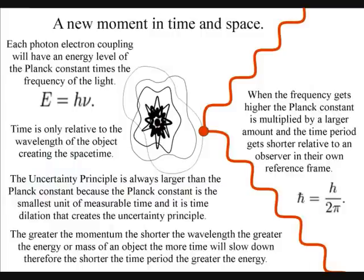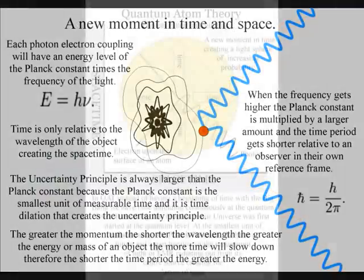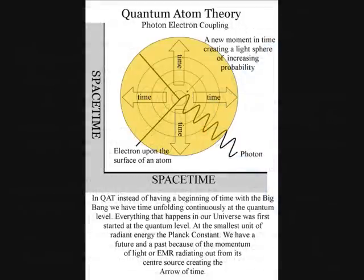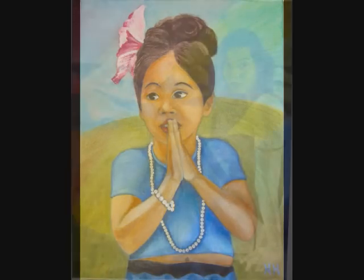In this theory, at the quantum level of the atoms, the moment of now is created by a single photon-electron coupling, creating a wave function of future possibilities. Even the individual atoms of the observer are radiating electromagnetic radiation continuously. The observer will feel this as the continuous flow of time and as the aging process.